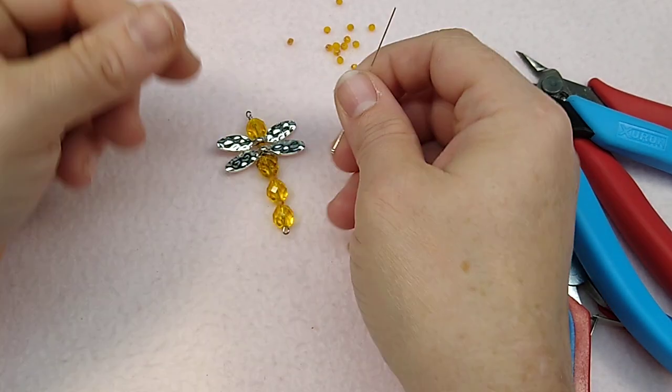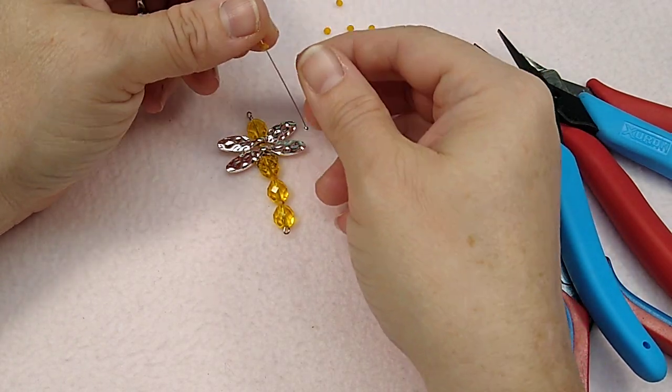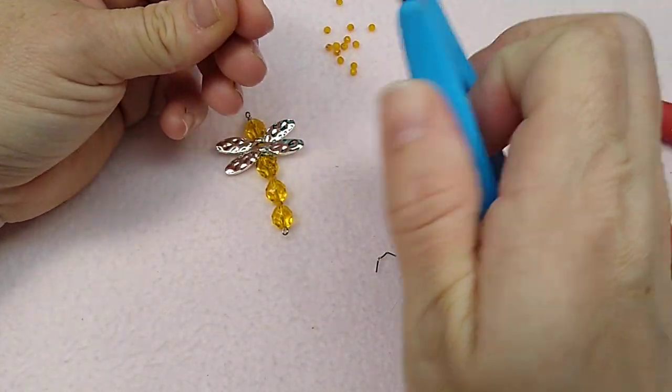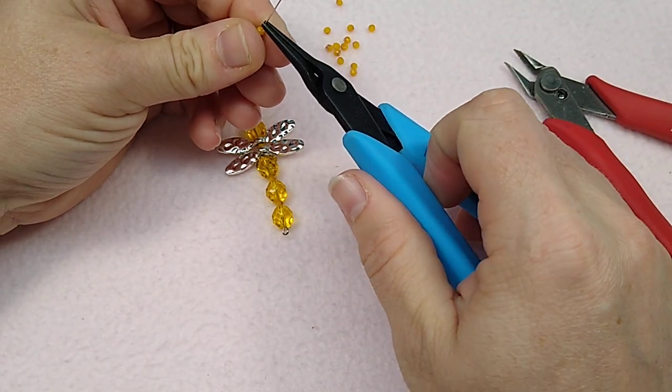Sometimes you have to use these ball head pins. I love these, but they're super thin. But this will be, this will work. I just want a little dangle on the bottom. I think that would be really cute. Okay. So we're going to make the teeniest, tiniest little loop that we possibly can. Teeny, teeny, tiny.